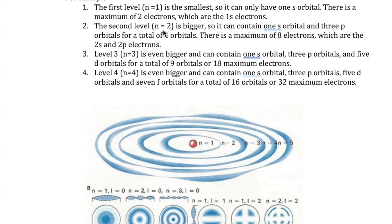Level two, with the symbol n equals 2, has more space and is bigger, so it can have more orbitals. It contains one S orbital and three P orbitals for a total of four orbitals. Since each orbital can have two electrons, we can have a maximum of eight electrons in level two. These are called the 2S and 2P electrons.